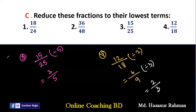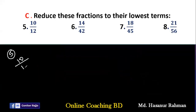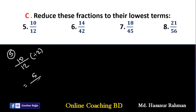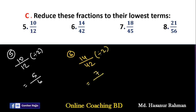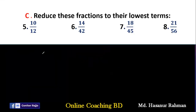Number 5 says 10/12. We divide by 2 first, giving 5/6. Number 6: 14/42. Both are even numbers, so we divide by 2 first, giving 7/21. Then we divide by 7: 7÷7=1 and 21÷7=3. So 1/3 is the lowest term of 14/42.